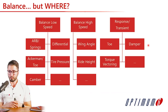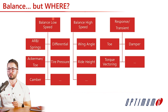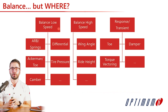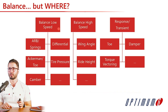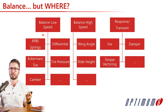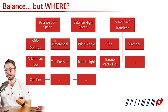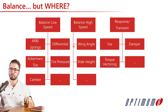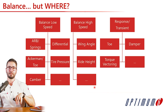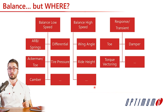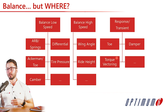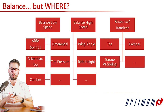These questions are very important because depending on where the car is understeering or oversteering, the setup change you make will be very different. For issues in low-speed mid-corner: anti-roll bars and springs to change roll stiffness distribution, differential, Ackermann, toe, tire pressure, camber. For high-speed balance: wing angle, ride height. For corner entry or transient response: toe, damping, torque vectoring. This is why getting the driver's feedback on exactly where in the corner the issue occurs is so critical.